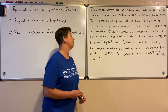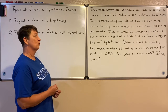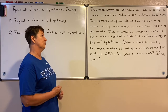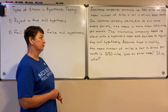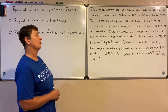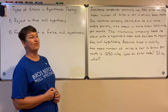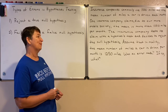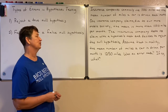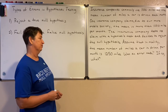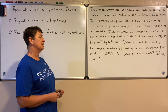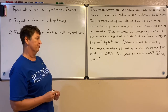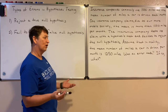Let's look at an example. Insurance companies commonly use 1,000 miles as the mean number of miles a car is driven each month. One insurance company claims that due to our more mobile society, the mean is more than 1,000 miles per month. The insurance company tests its claim with a hypothesis test and decides to reject the null hypothesis. Assume that in reality, the mean number of miles a car is driven per month is 1,250. Was an error made?